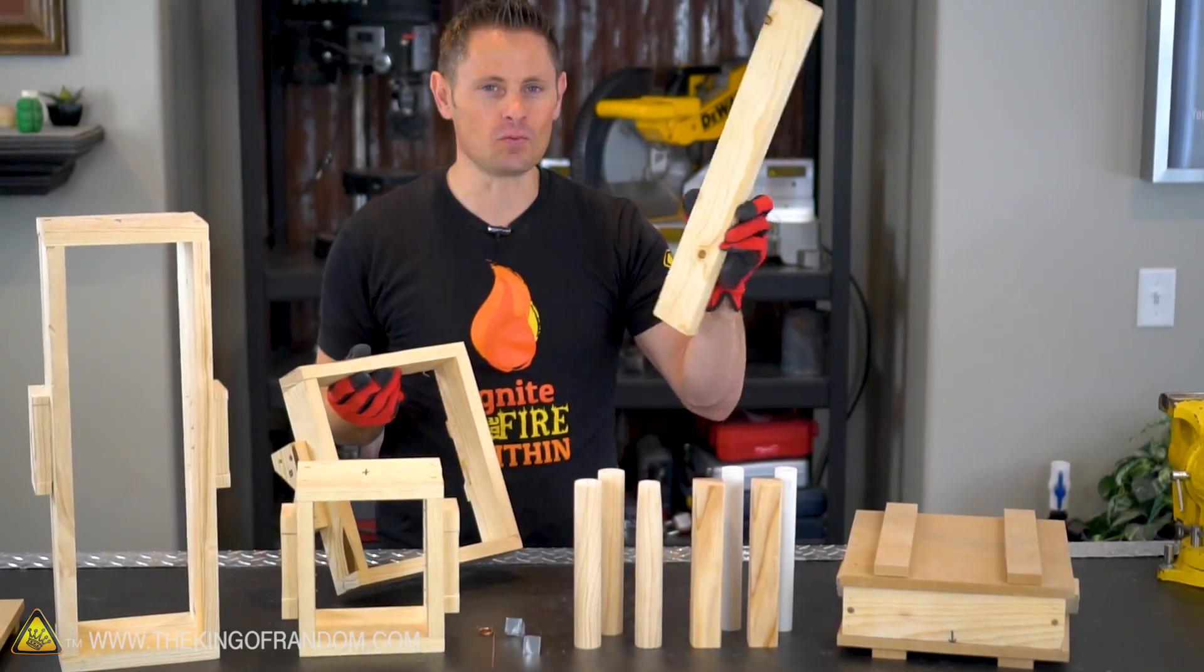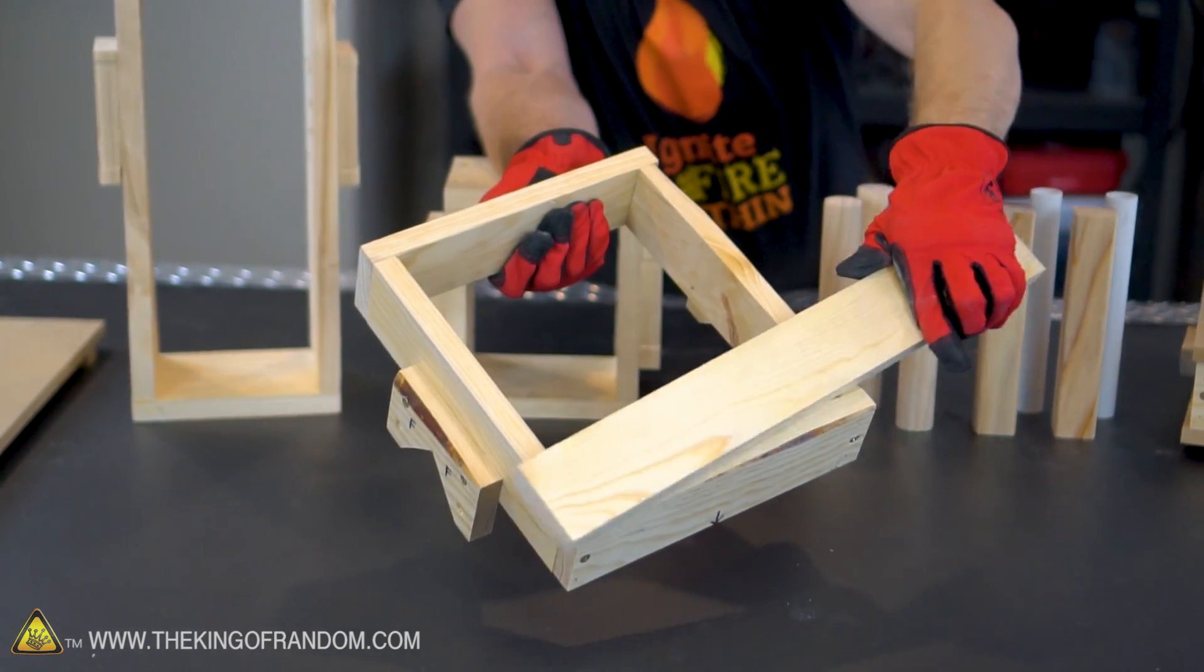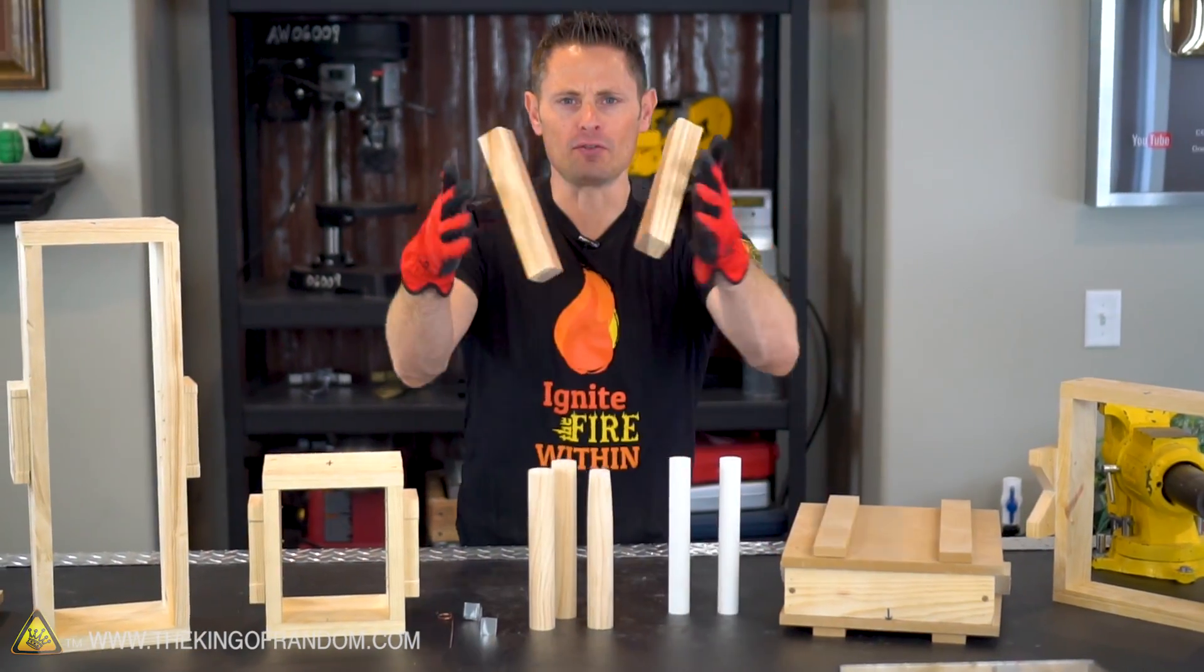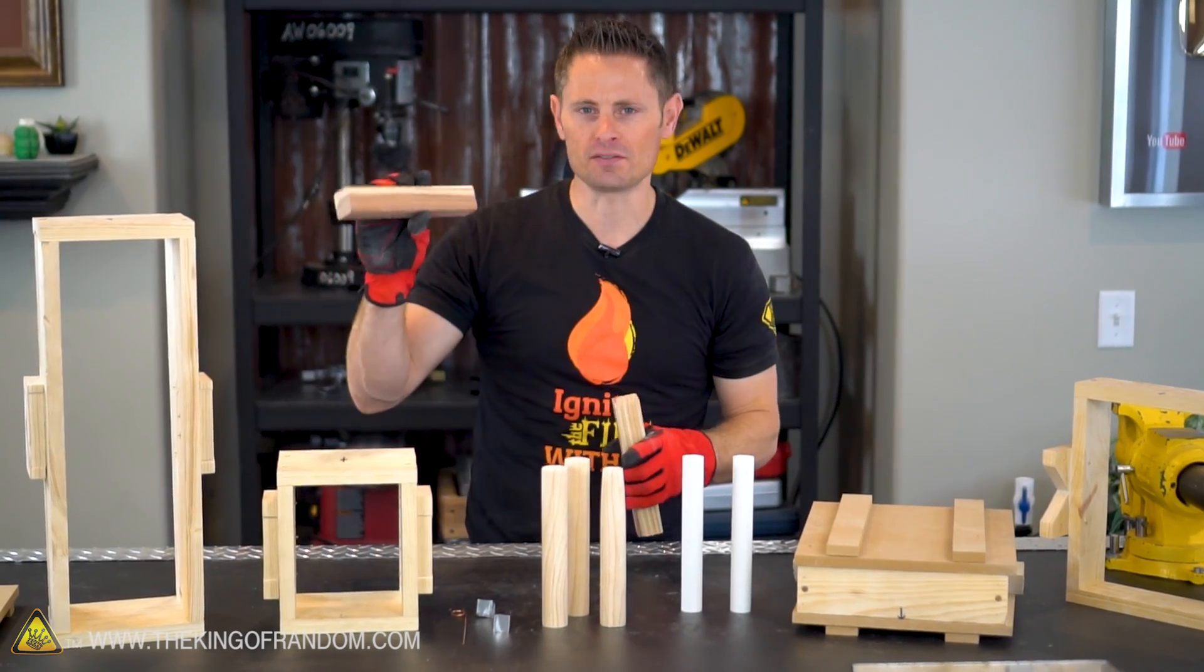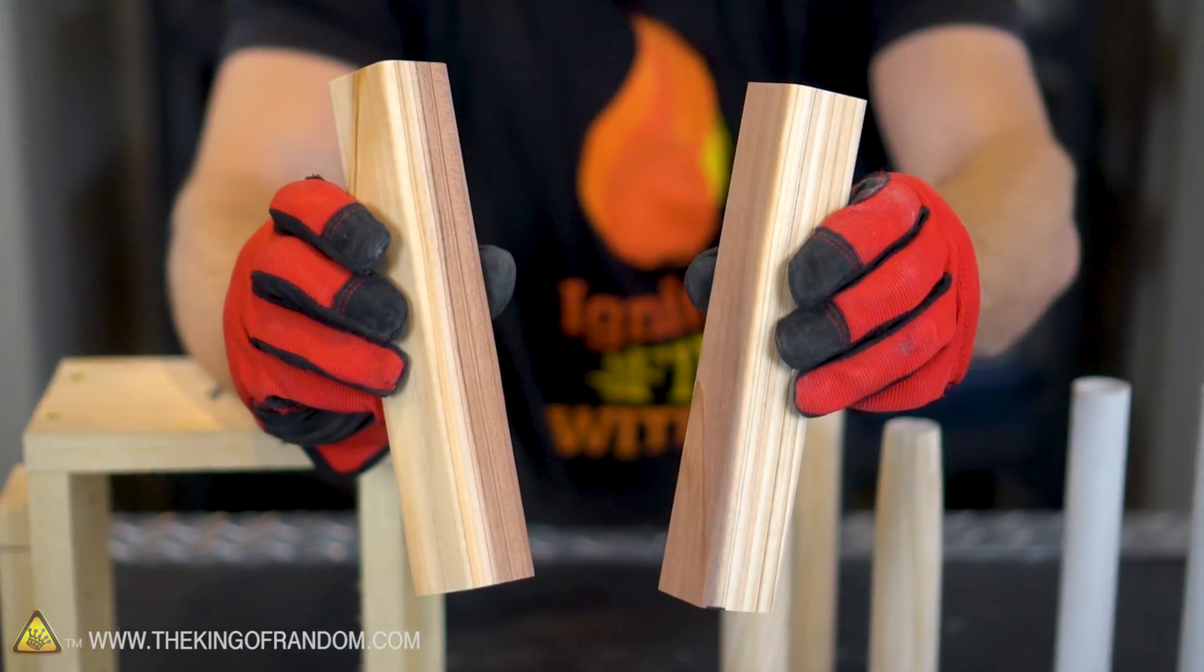We also have a scrap piece of 1 by 3, and this is going to be used as a straight edge to help level off the sand. Next up we've got a couple of ramming tools. These are simply 8 inch lengths of 2 by 2 and are used for pounding the sand into place.